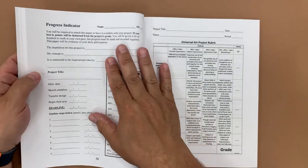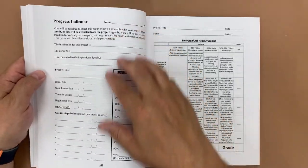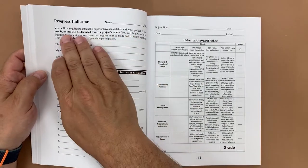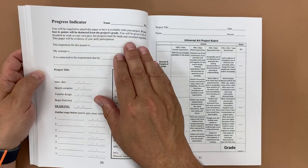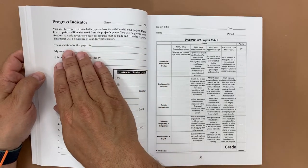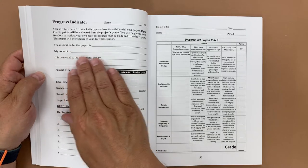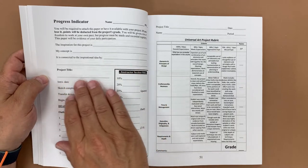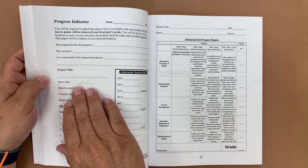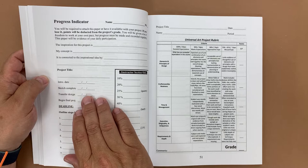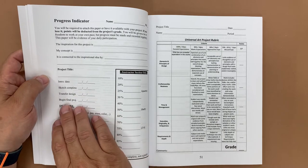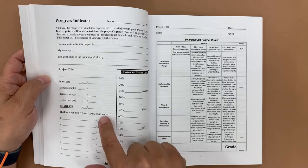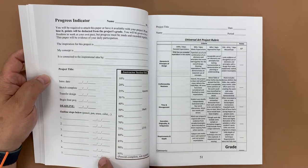Then as they're actually working on the projects, this is the page that I have them have open on their table at all times. So this is the progress indicator. Again, you'll be required to attach this paper or have it available for your project. And again, they transfer over their inspiration for the project, the concept that they're going to be doing, and how it's connected to their inspiration idea. They can give it a title if they're ready to, the introduction date, the sketch should be completed by, a transfer design by, and then begin their final project. And these are the outlines as they would kind of outline it and what they feel like they can hit as deadlines.